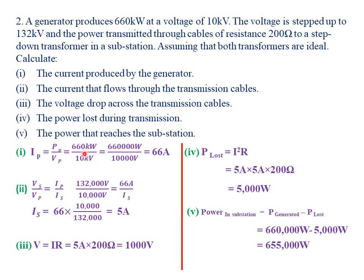To convert each quantity to its SI unit: the SI unit for power is the watt, and 1,000 watt equals 1 kilowatt. So 660 kilowatt equals 660,000 watt. Similarly, 10 kilovolts equals 10,000 volts. Computing 660,000 watt divided by 10,000 volts gives a current of 66 amperes as the current produced by the generator.